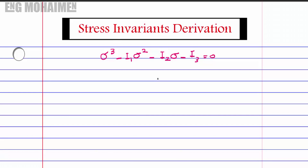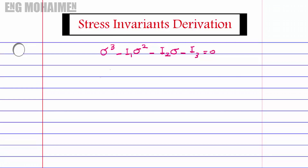Hello, this is Mohamed. Today I'm going to show you how to do the stress invariance derivation starting from the equation shown on the screen. Starting with the first invariant, I1 equals sigma x plus sigma y plus sigma z. This is the first invariant equation; there is no need to do any derivation for this invariant.